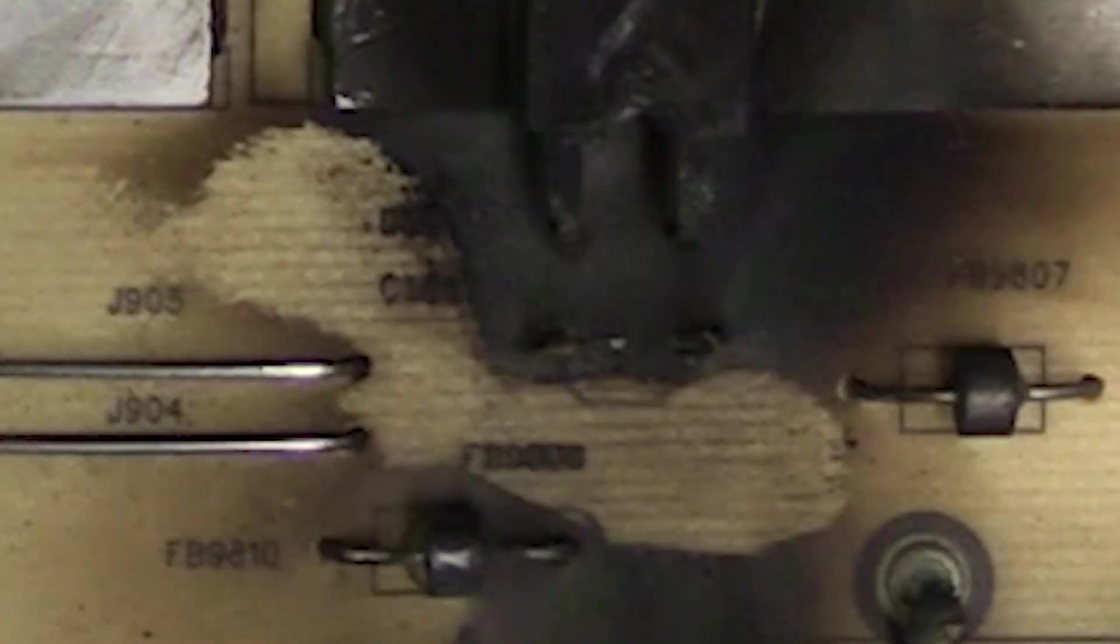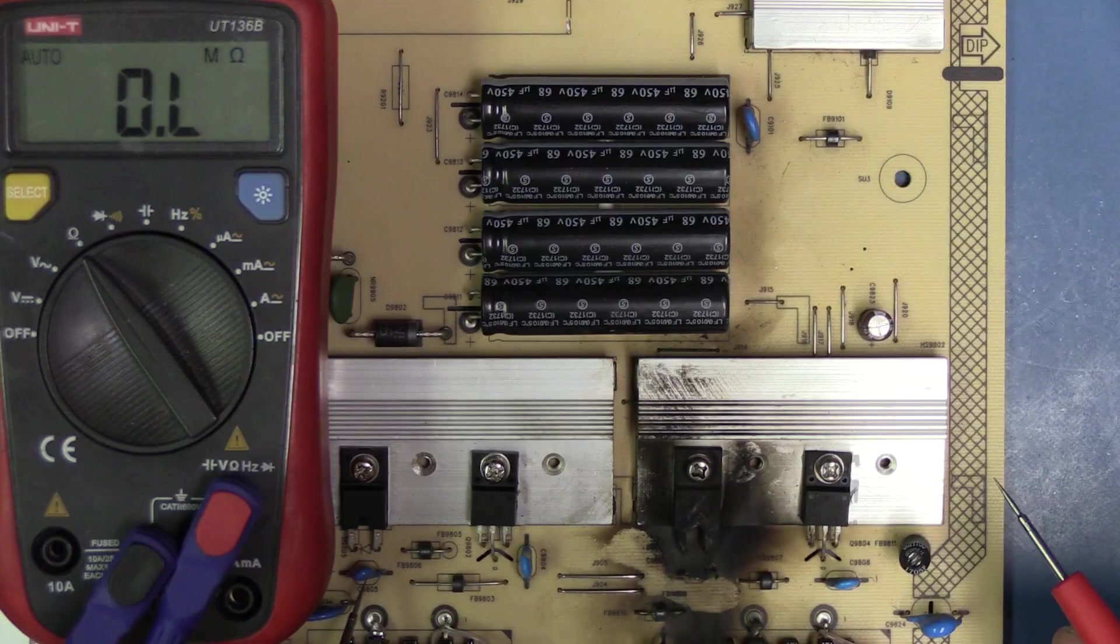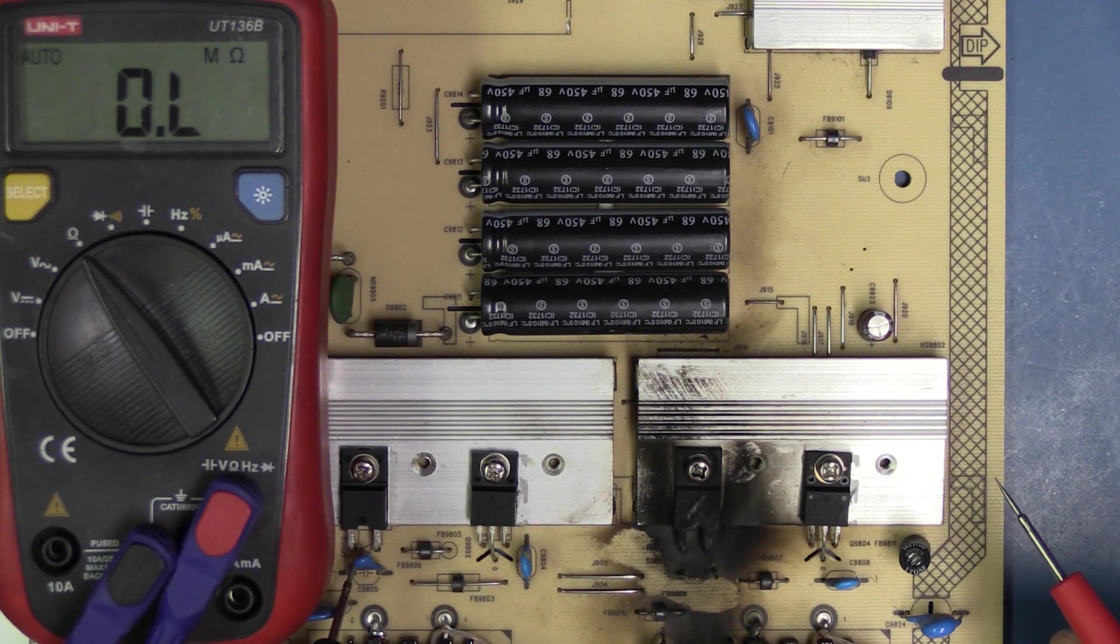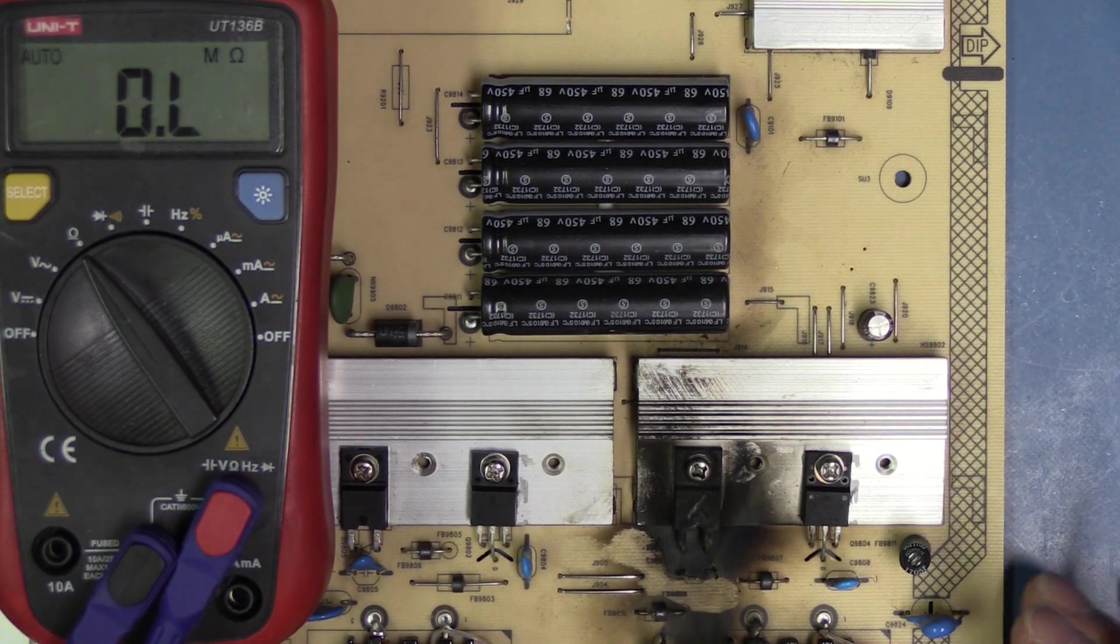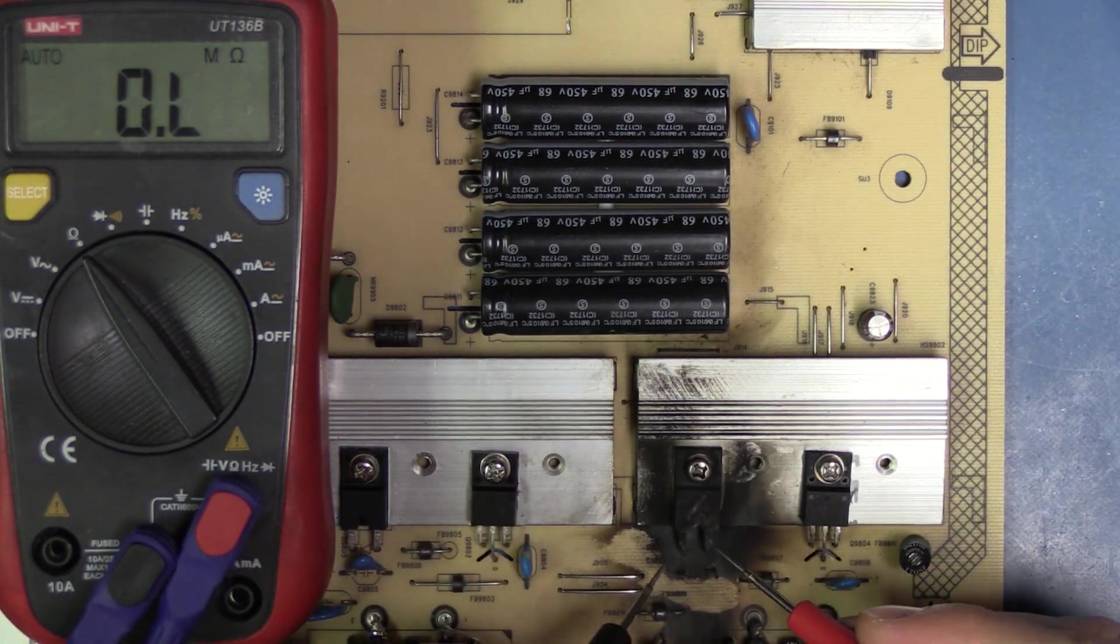It's obvious we have some damage here. One of the things I'm going to do is replace the capacitor that was here previously. This one over here is actually in parallel with it, so we're going to replace that one as well, and check if these diodes and transistors are shorted. I assume they are.